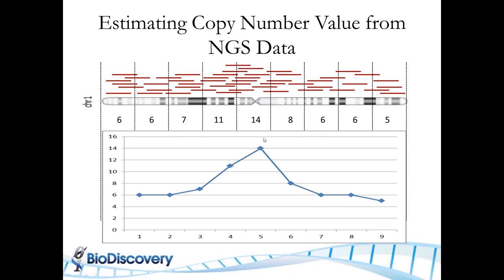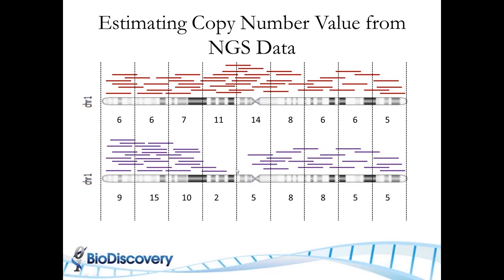One way of correcting for biases would be to do like aCGH, do a comparative approach. So you compare a test to a reference. If you assume this is a reference and your test sample, and you use the same protocol for measurement, you can then say, well, in each bin I'm counting 9 here versus 6, so you can create a log ratio.